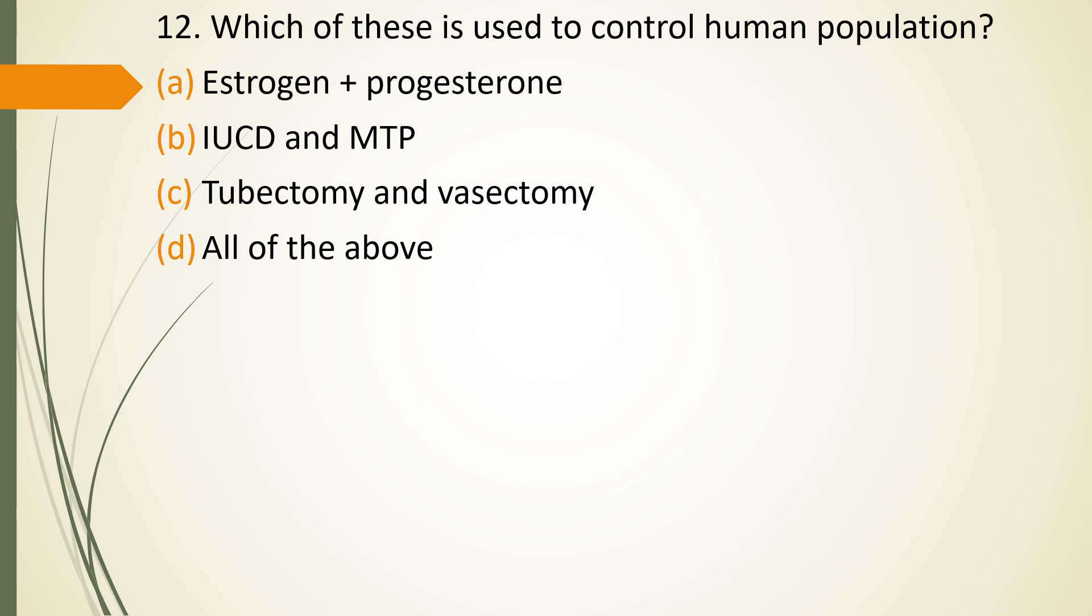Question 12. Which of the following is used to control human population? Estrogen plus progesterone, IUCD and MTP, tubectomy and vasectomy or option D. All of above. The correct answer is option D. All of above.